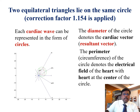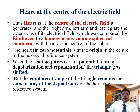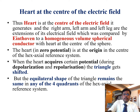Each cardiac wave can be represented in the form of circles in the hexa-axis reference system. The diameter of the circle denotes the cardiac vector — the resultant vector. The circumference of the circle denotes the electrical field of the heart with heart at the center of the circle. The right arm, left arm, and left leg are the extensions of the electric field, compared by Einthoven to a homogeneous volume spherical conductor with heart at the center. When the heart acquires certain potential during depolarization and repolarization, the triangle gets shifted, but the equilateral triangle shape remains the same in any of the four quadrants of the x-axis reference system.